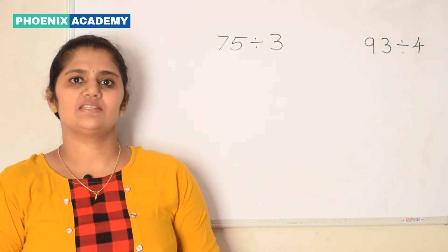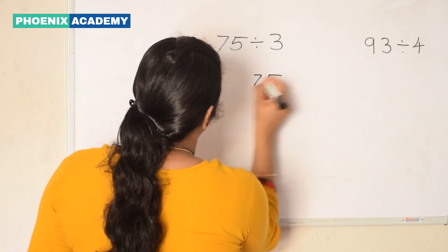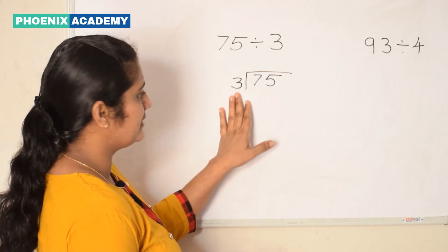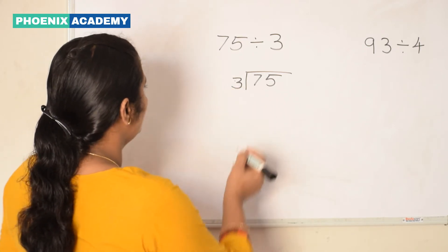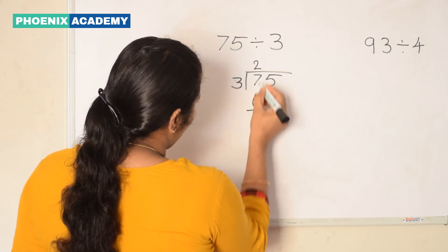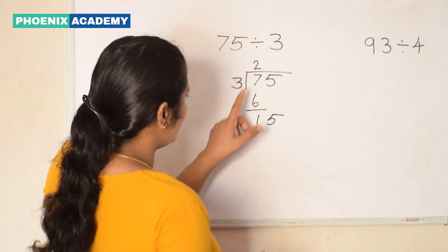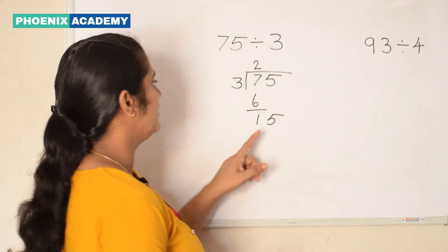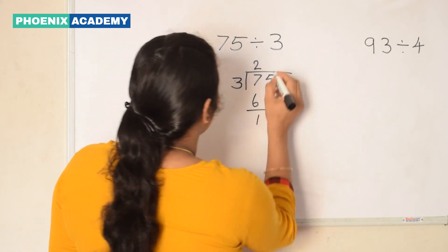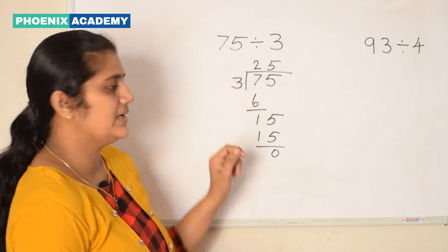Division of 2-digit numbers with regrouping. 75 divided by 3. Here 7, the digit in the 10th place, is greater than 3. So we divide 7 by 3. 2 3s are 6. We subtract 6 from 7. We get 1. Bring down the 1s digit and regroup 1 ten and 5 ones into 15. Then divide 15 by 3. We have 3 5s are 15. So 75 divided by 3 is 25.